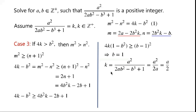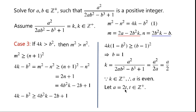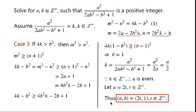We assumed that k equals a squared over 2ab squared minus b cubed plus 1. Substituting b equals 1, we get k equals a squared over 2a, which equals a over 2. Since k must be a positive integer, a must be even. We let a equal 2t, where t is a positive integer. Thus (a, b) equals (2t, 1), where t is a positive integer, is another general solution.